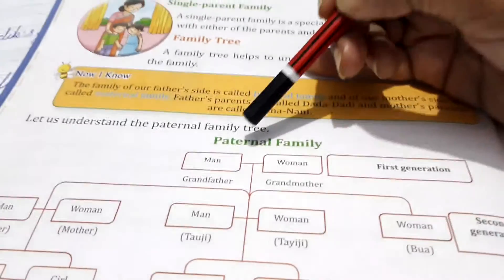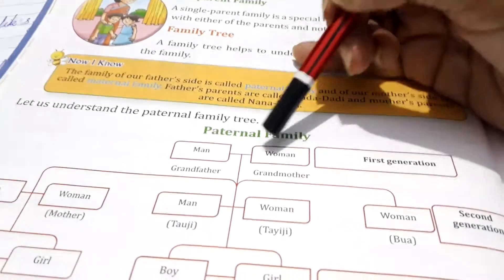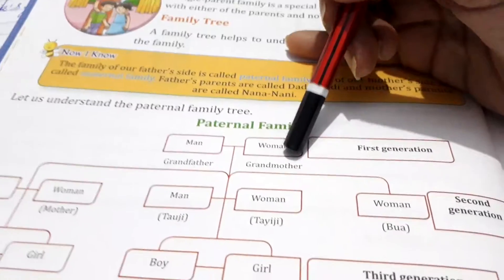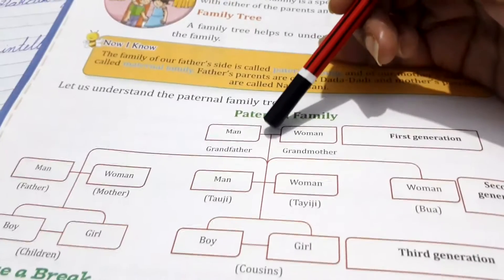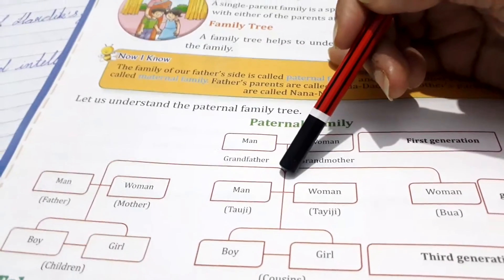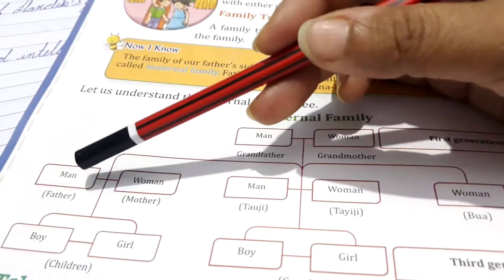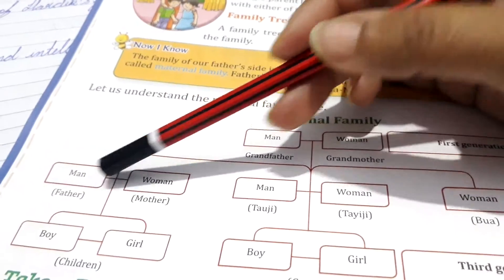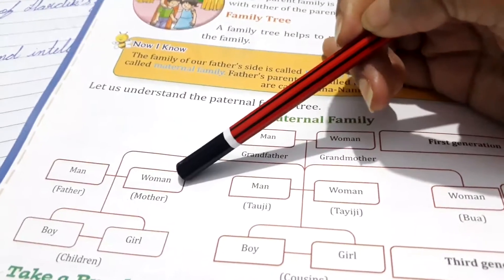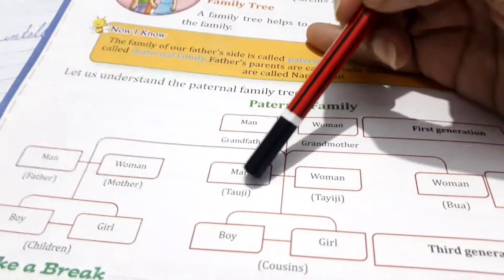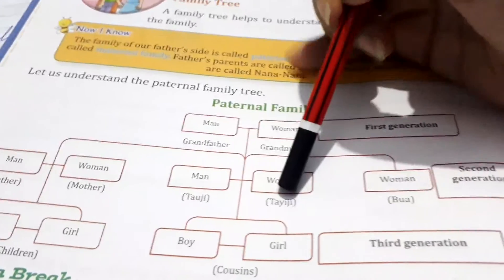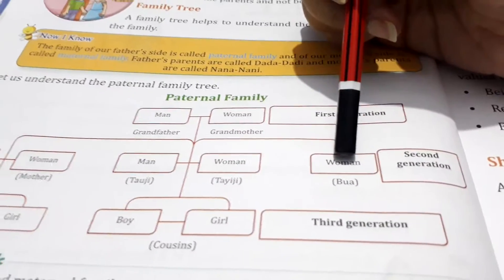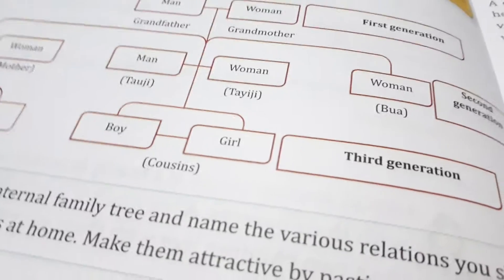So, this is a man and woman — that is dada, dadi. This is the first generation. After that, we start the next level. So, first we have father, then mother. And on the other side, there is Tauji and Taiji, and also Bua. This is our second generation.